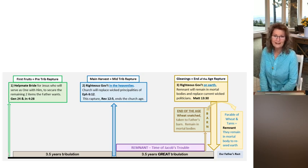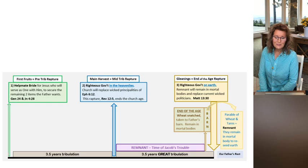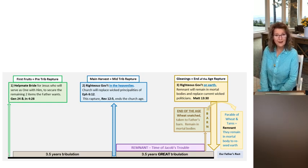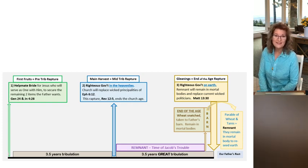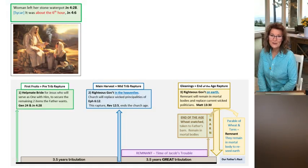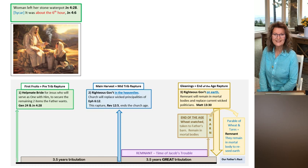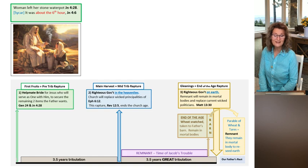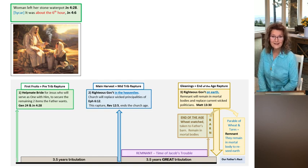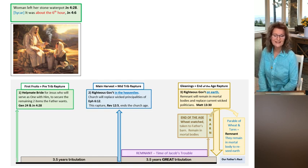What I have you looking at here is that the pre-trib rapture is of the helpmate bride for Jesus, who will serve as one with Him. That's the first fruits rapture, represented through the woman who left her stone water pot, the woman at the well in John 4. In verse 28, she leaves her water pot. That happened in Sychar, and the scriptures tell us it was about the sixth hour, John 4:6.